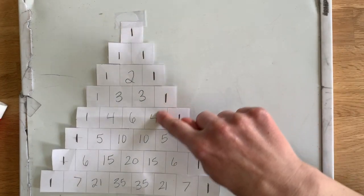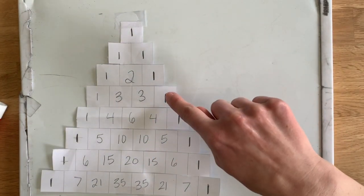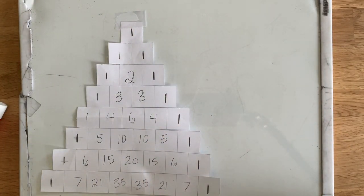And then this diagonal is called the tetrahedral numbers, but if you're really interested in knowing what that is I'm going to let you research that on your own.